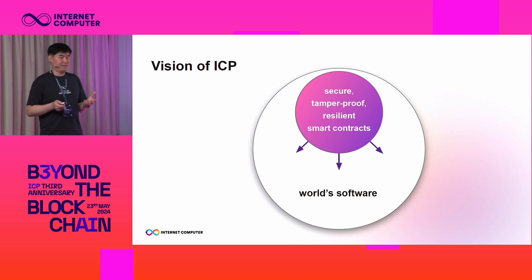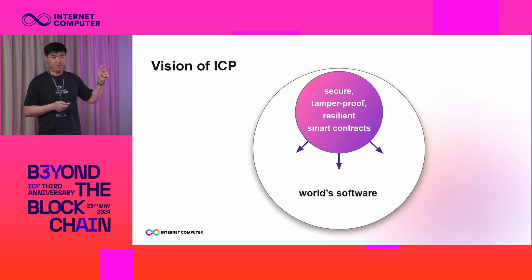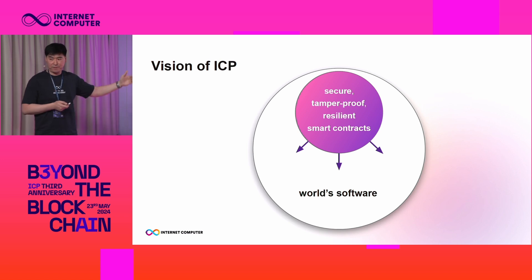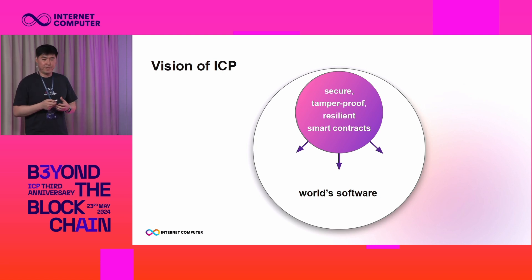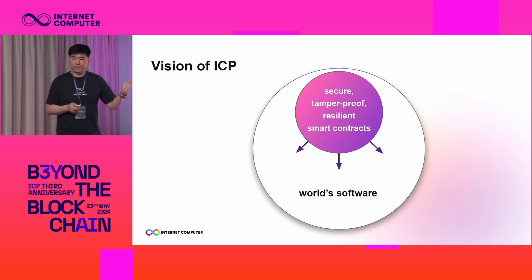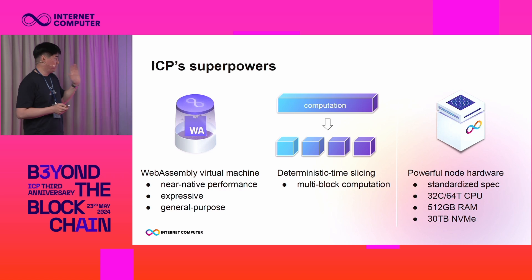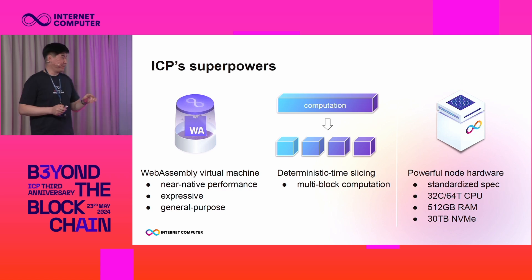The vision of ICP is to bring the benefits of smart contracts to world software. The idea is that since smart contracts have these nice properties and benefits, they are a better way to write software, and in the future the vision is to move most of world software to smart contracts. ICP, early on when it was being designed, had some decisions and trade-offs made with this vision in mind, and today we see these decisions paying off. I took the top three features of ICP that are important for AI computation and powerful smart contracts — there are more features, but I only have limited time.